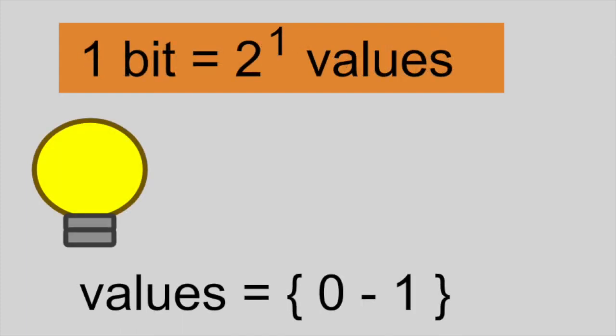Let's start with 1 bit. As we know from our definition of a bit, a single bit can represent a total of 2 different values, 0 or 1.